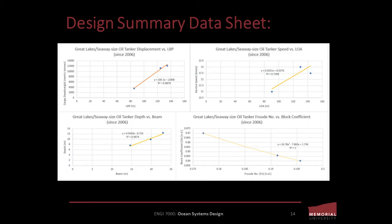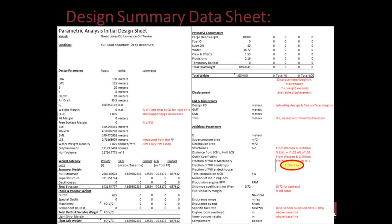From my data analysis, I've observed that a good median length between perpendiculars seems to be 120 meters with a beam of 20 meters and a depth of 10 meters. So I'm going to use these as my key independent variables.